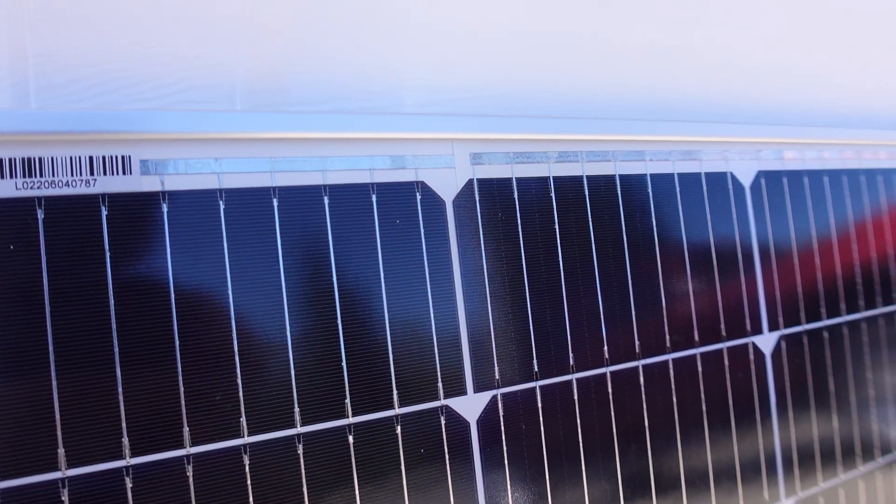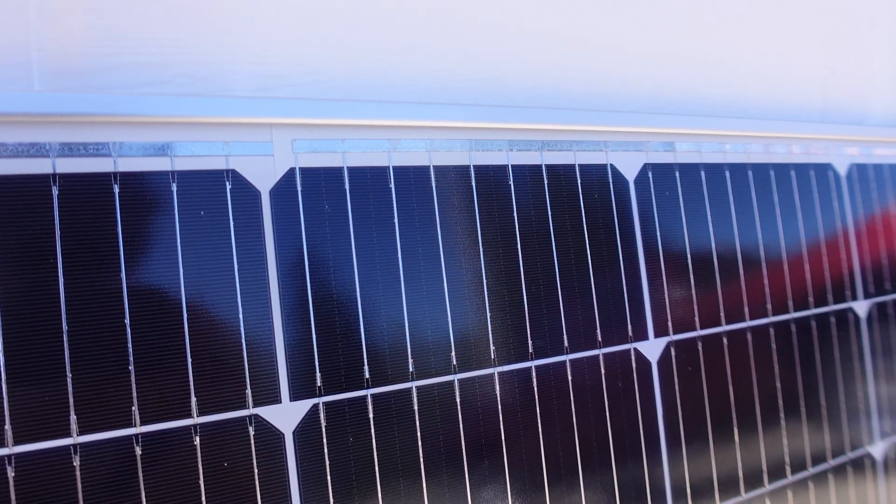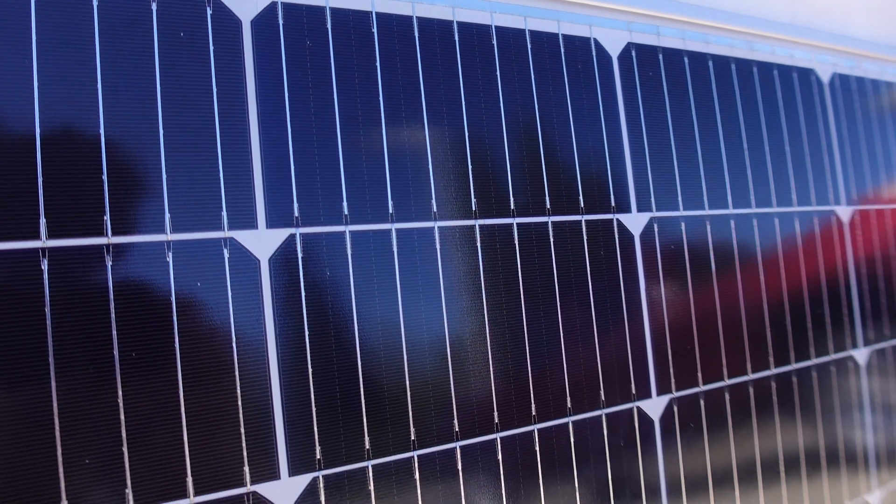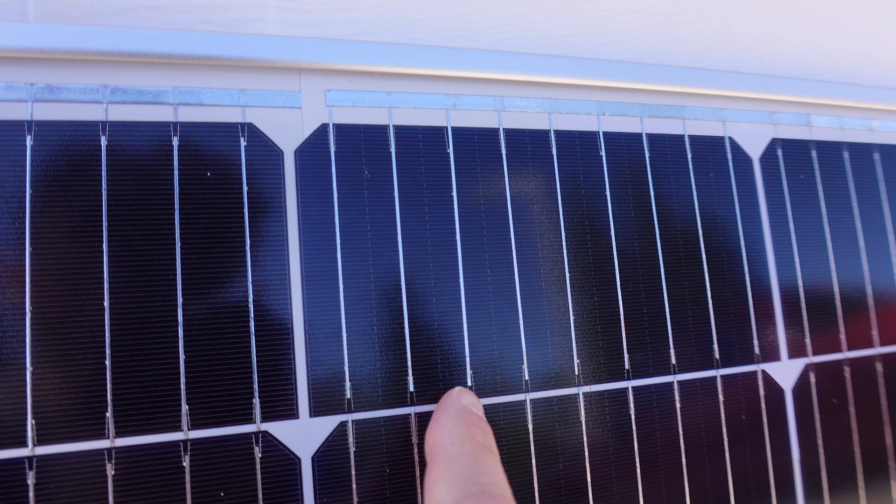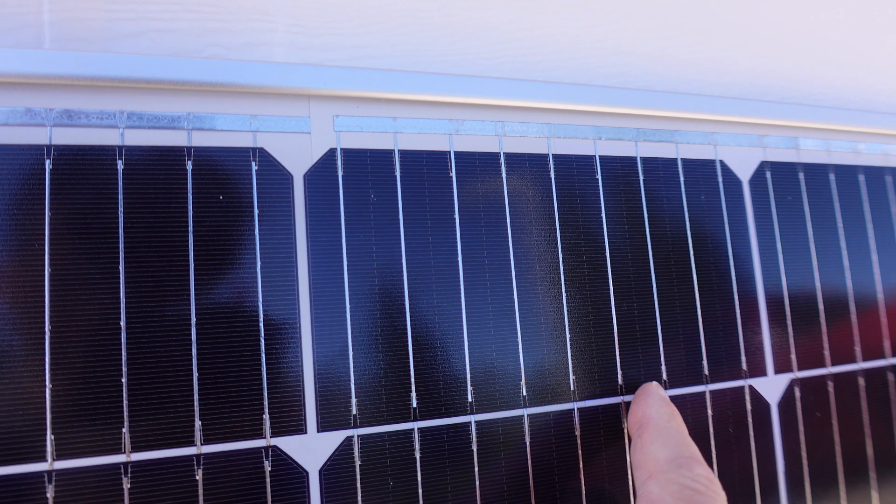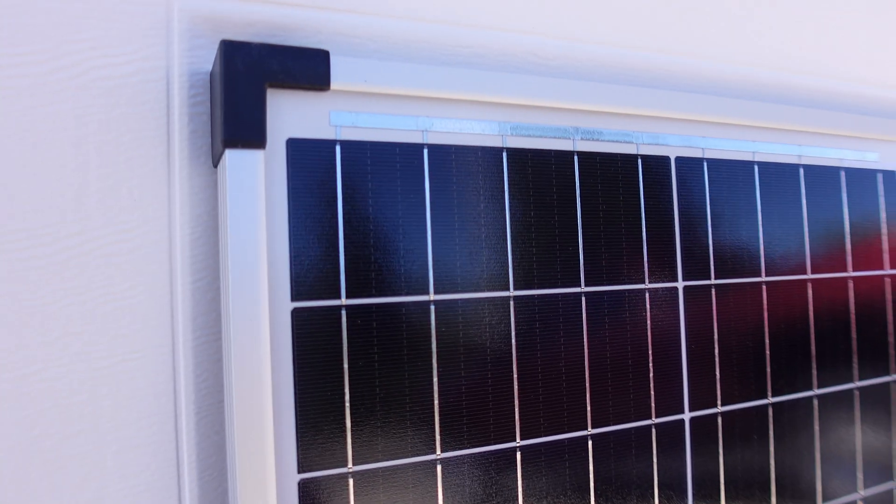Each one of these panels is brand new out of the box. The new power 100 watt solar panel uses more recent technology utilizing half cut solar cells. Each one of these solar cells has nine bus bars in it, which is more common in a lot of solar panels you'll see today.